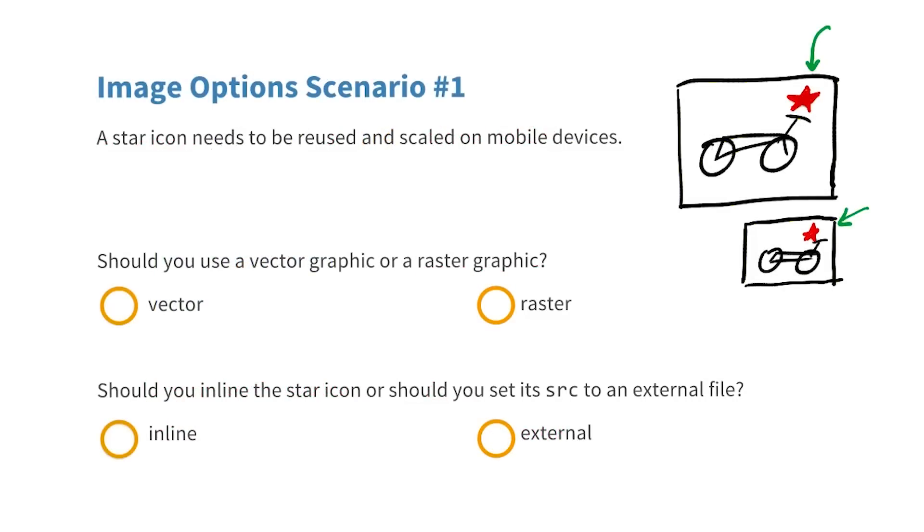You're developing a mobile app that displays an ever-changing catalog of bikes for sale. You need an image for this star right here to indicate which bikes have just gone on sale within the last 24 hours. You want to scale the star image with the rest of the app in order to fit mobile phones and tablets proportionally.